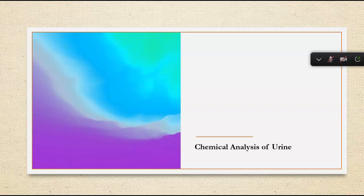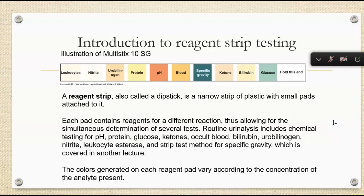Good morning, everybody. We're going to jump right in and start part one of the chemical analysis of urine, splitting up this lecture just because it is about 80 some odd slides long. When we talk about urine analysis, we're going to start with reagent strip testing, and I want you to really pay close attention to the chemical reactions that are happening on each reagent pad.